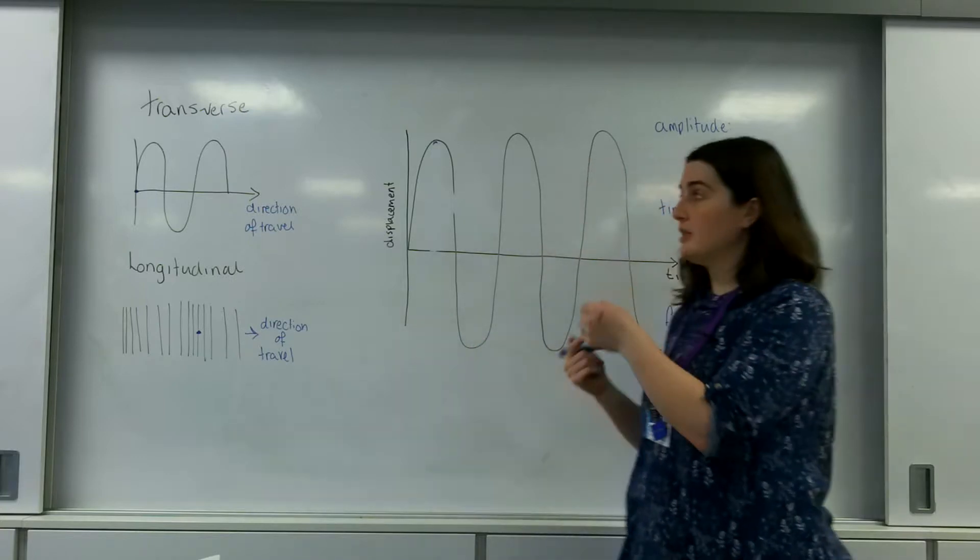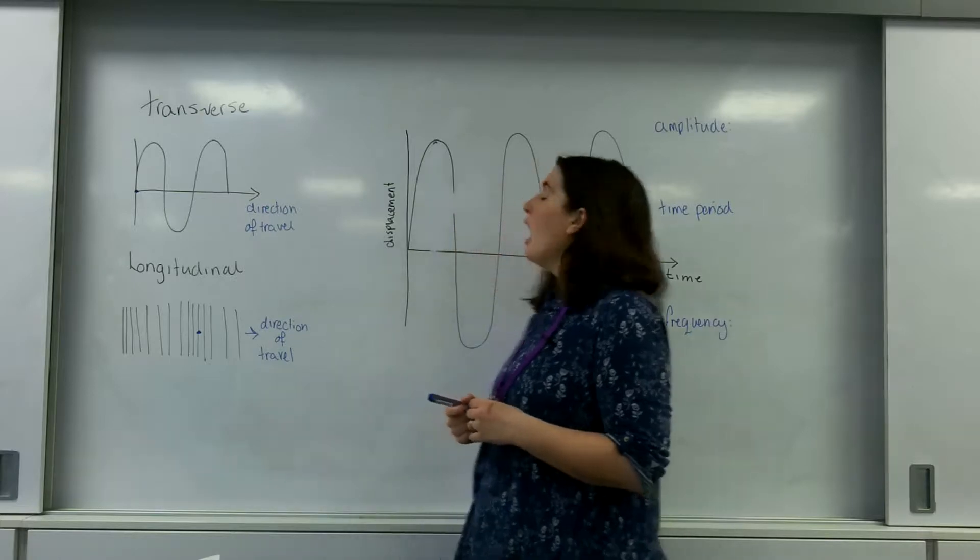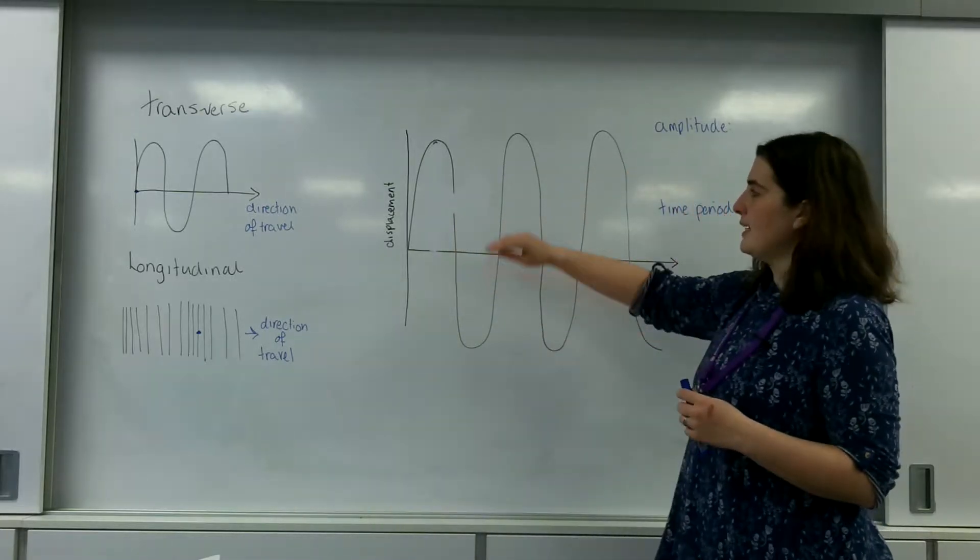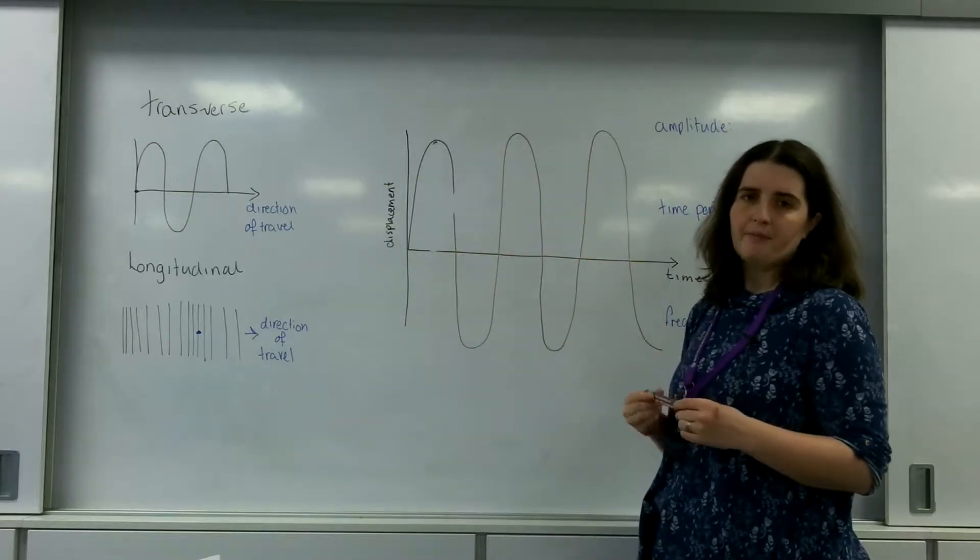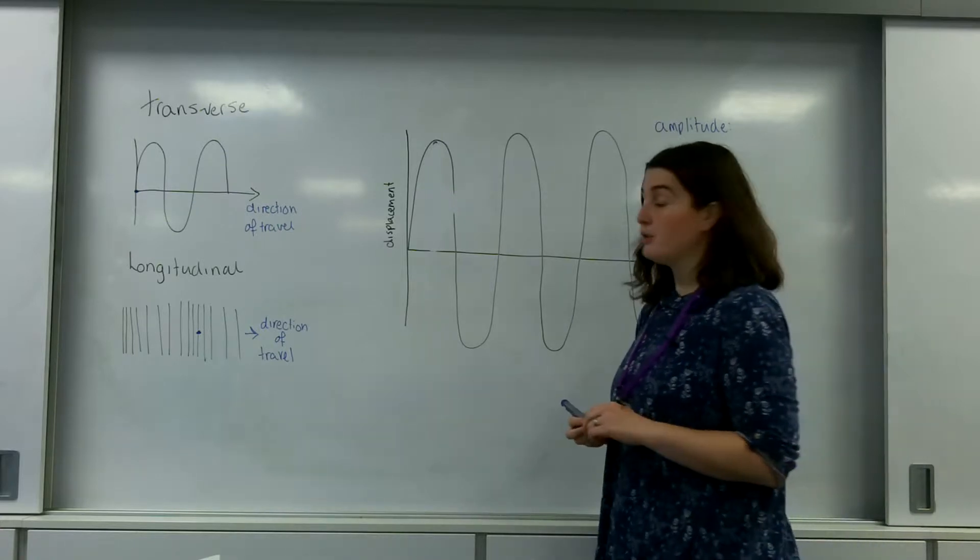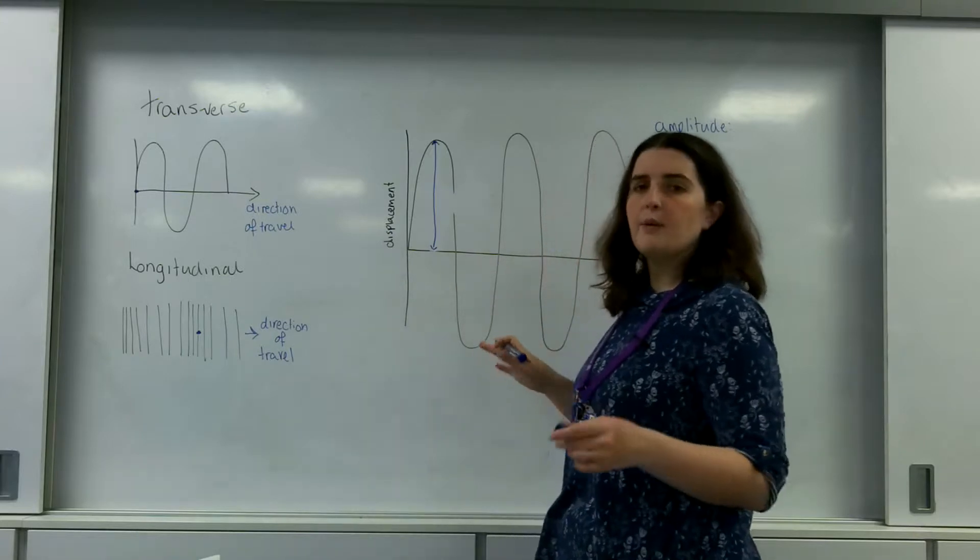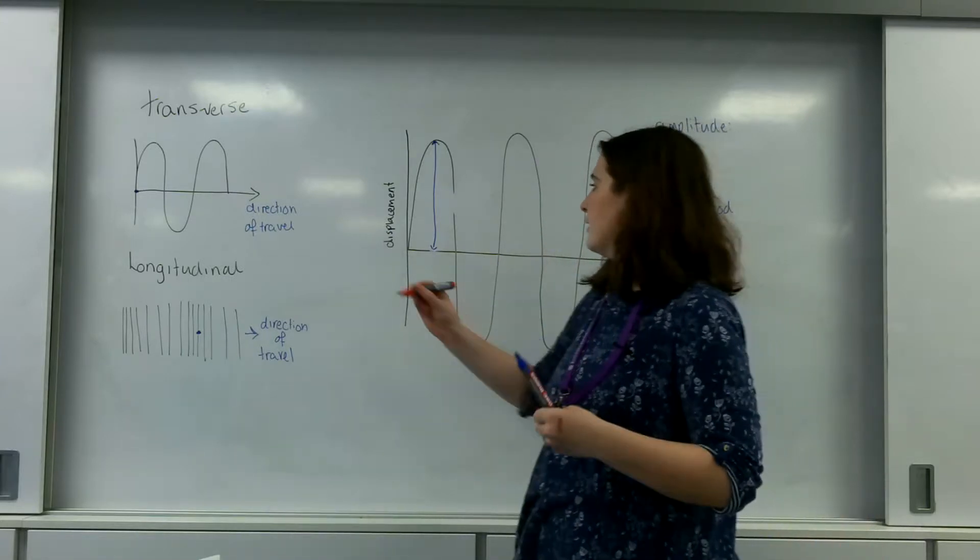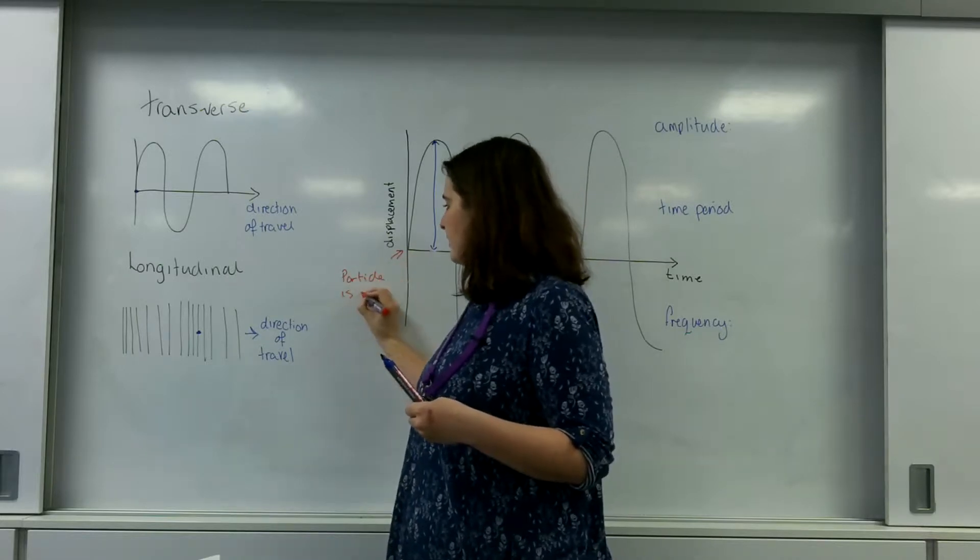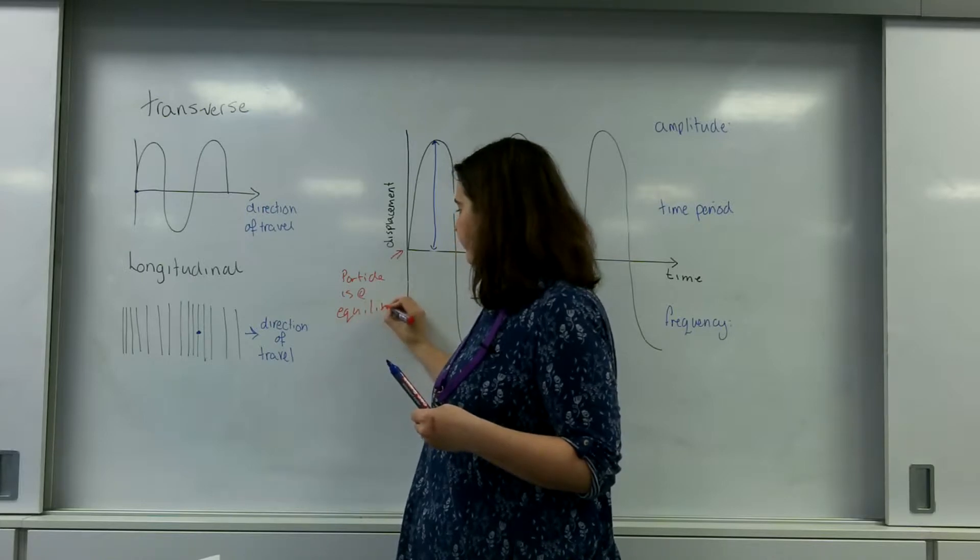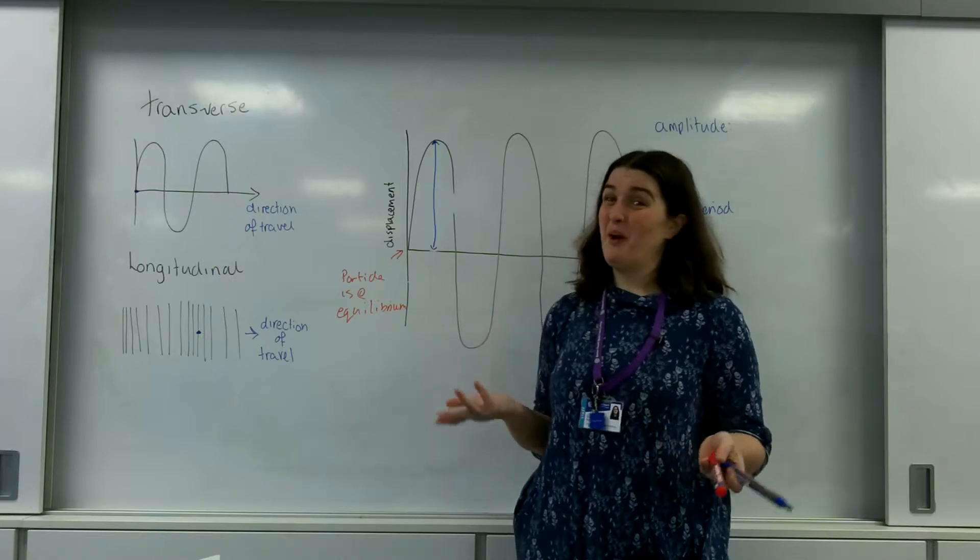Now from this graph, a situation which is a universal one that I can use for both transverse and longitudinal, what we can look here is we can look at many features of this wave. And first of all I'm going to look at the amplitude. The amplitude is measured from this line here, this equilibrium point. This is the point where the particle is at equilibrium.